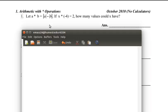Let A star B equal the absolute value of the absolute value of A minus the absolute value of B. If x star negative 4 equals 2, how many values could x have?